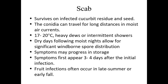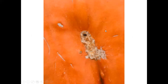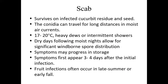With scab, the symptoms can progress in storage. You can get a smaller lesion that then grows bigger, or you might not even see the lesion when it first goes into storage, but it continues to grow once it's there. Fruit infections tend to occur late summer to early fall during that fruit sizing to fruit ripening period.